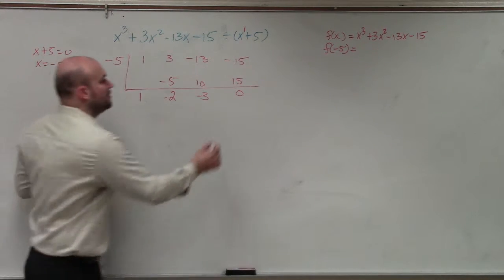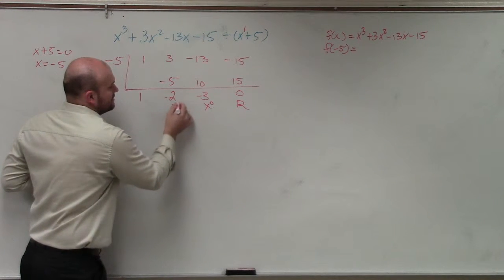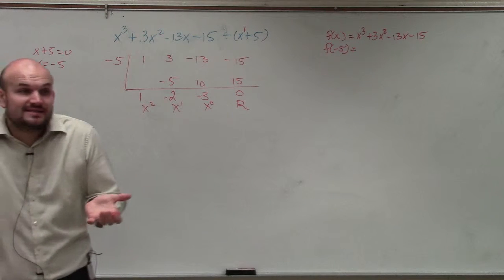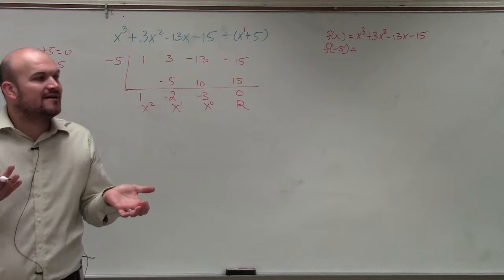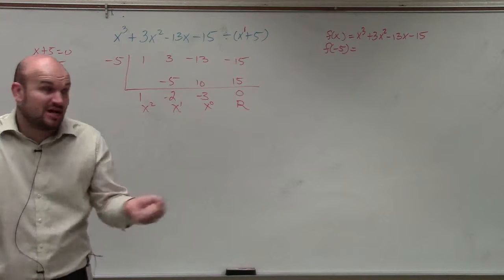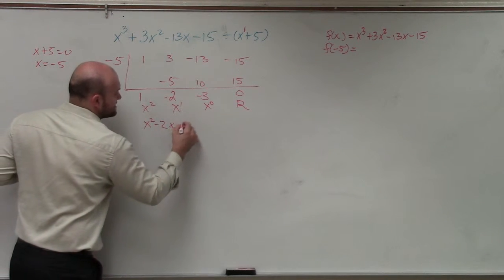Now remember, that is your remainder. This is your constant, linear, quadratic. So my quotient, which is also called a factor, is x squared minus 2x minus 3.